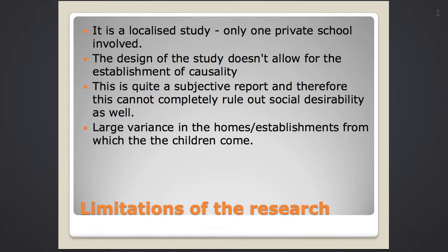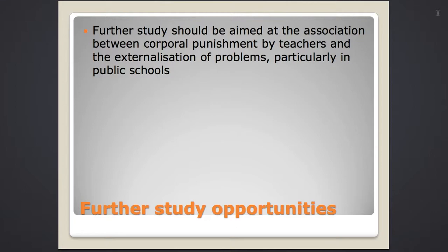In outlining the limitations of this research, it's very obvious that the study covered only one private school in one town, not a public school, leading to obvious gaps in generalised study rates. General prevalences cannot be determined from this data alone. The design doesn't allow for the establishment of causality, and as a subjective report, social desirability cannot be completely ruled out. There was also a large variance in the homes and establishments the children came from — around 16% came from institutional care. A further study should be aimed at the association between corporal punishment by teachers and externalisation of problems, particularly in public schools.